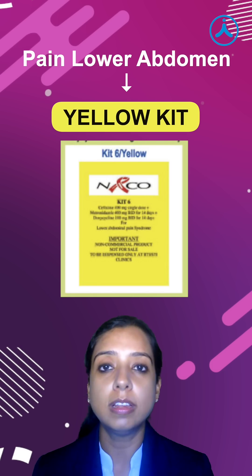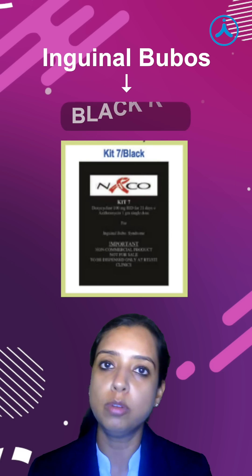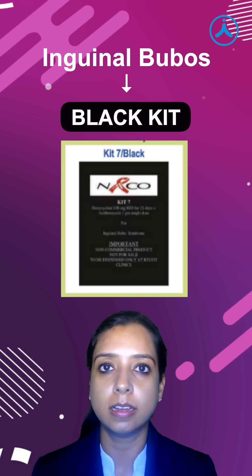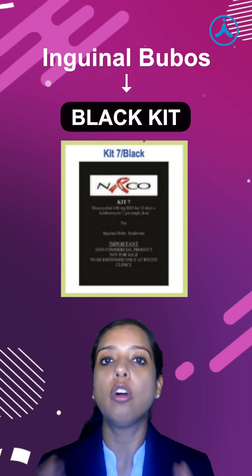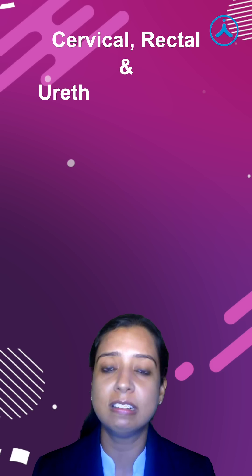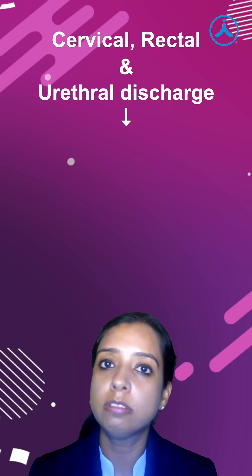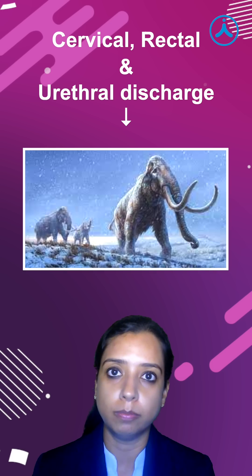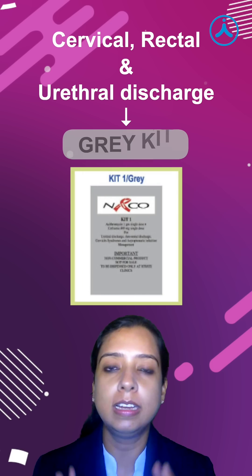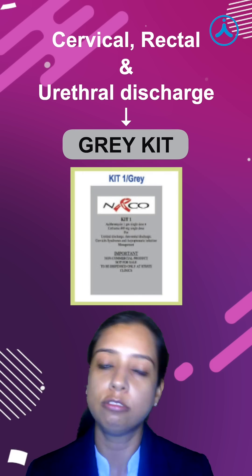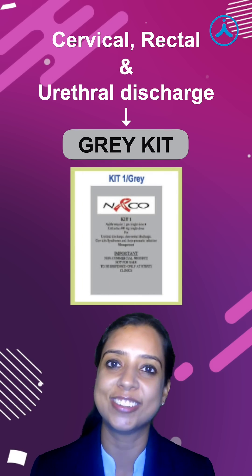For buboes, B for buboes, B for black — black kit. For all remaining other discharges — cervical, rectal, and urethral — that is the mammoth in the room. So, grey kit, grey mammoth. It's for cervical, urethral, and rectal discharge.